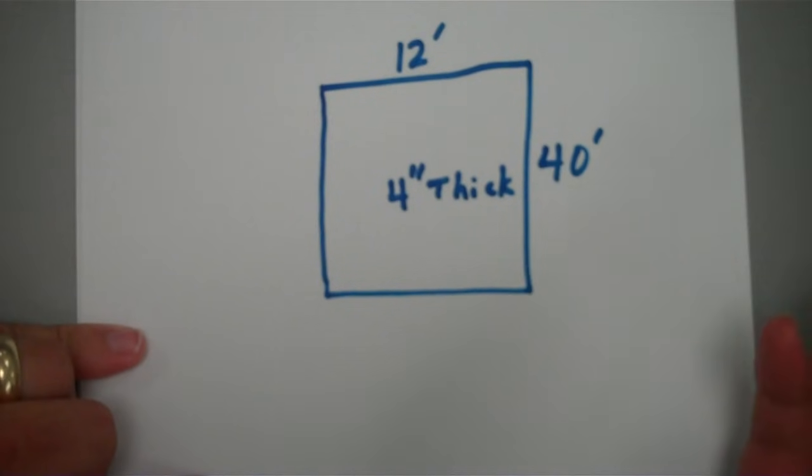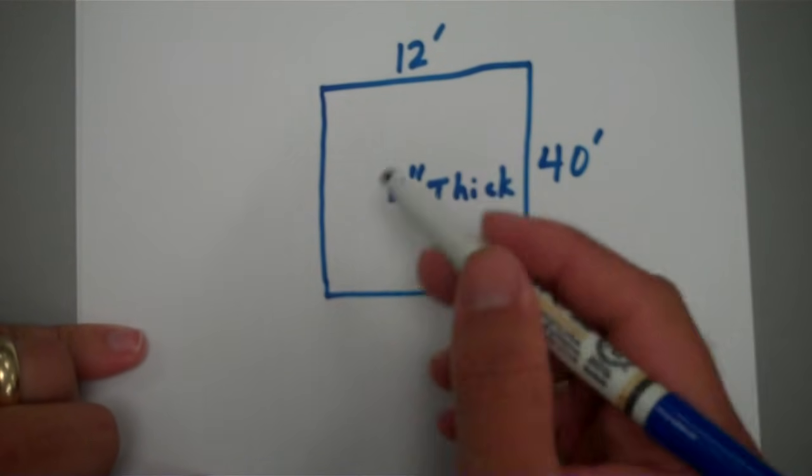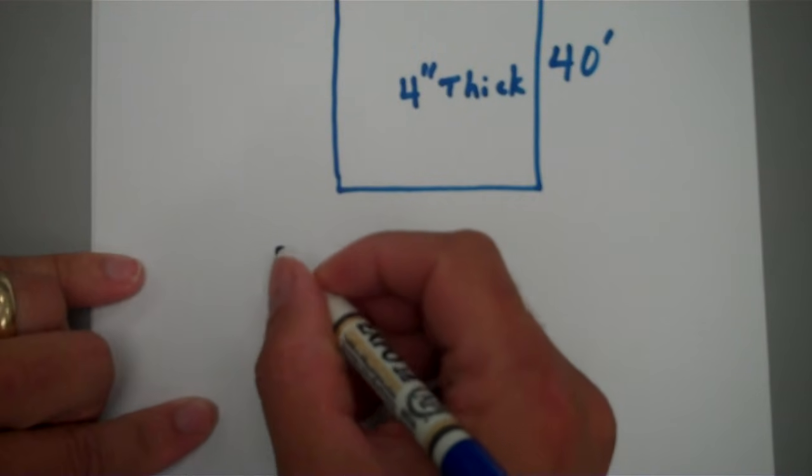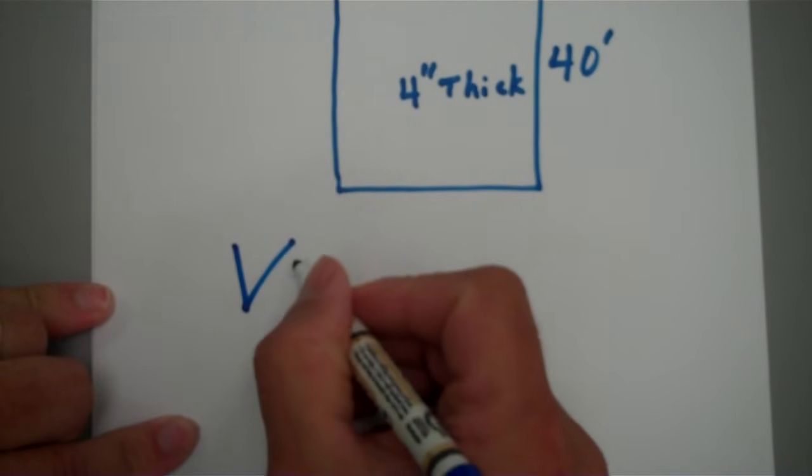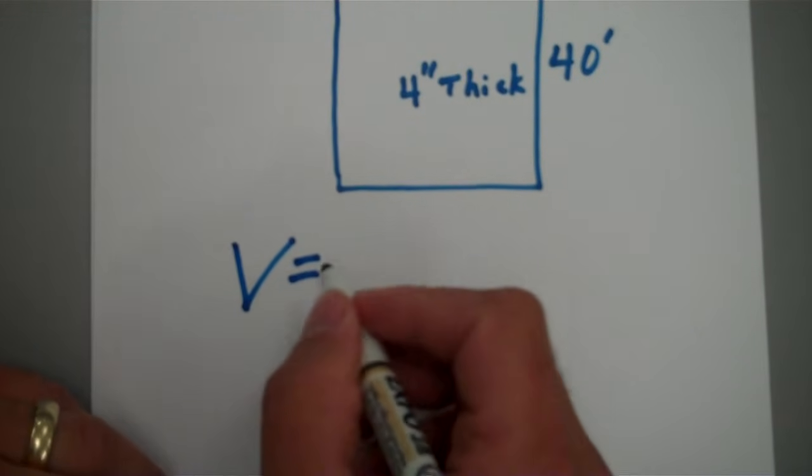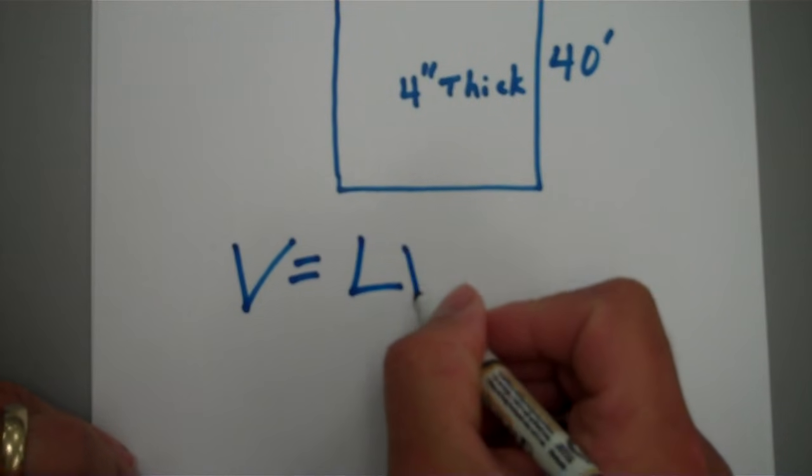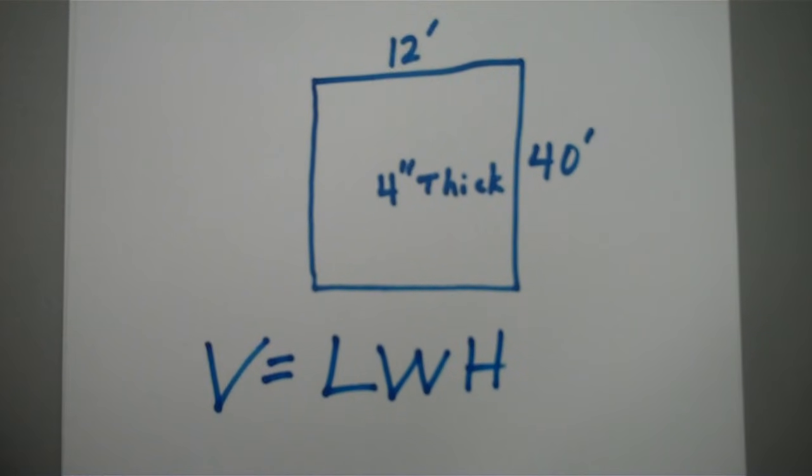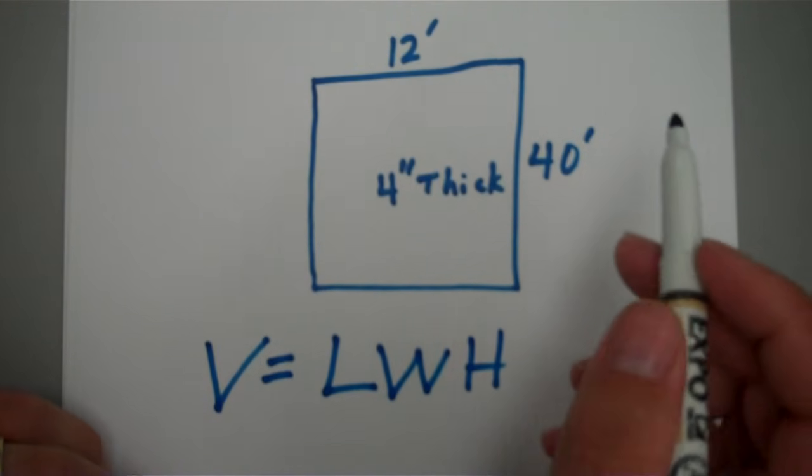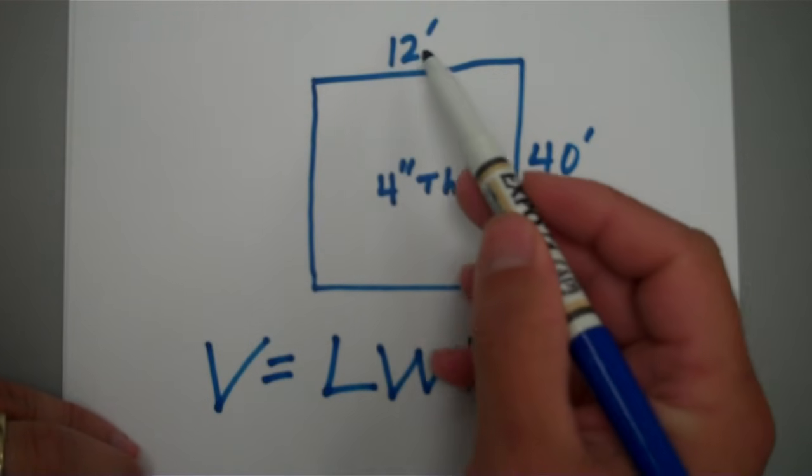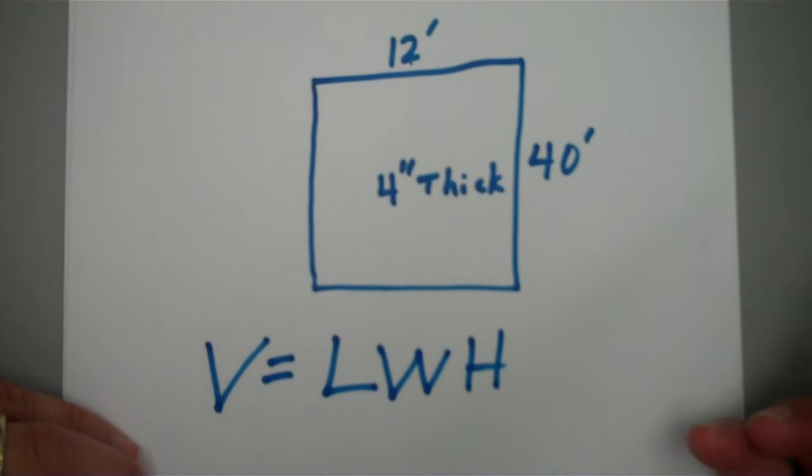The basic thing I have to do is figure this up. This is just an easy volume problem. Volume equals the rectangular volume formula: volume equals length times width times height. Now first thing we've got to do is make sure that our units are all the same and always do it in feet. So length is 40 foot, width is 12 foot, but our thickness is 4 inches.